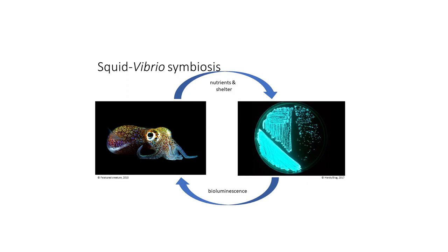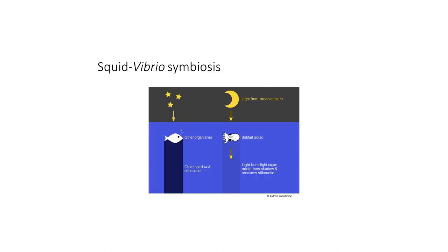The Hawaiian bobtail squid, Euprymna scolopes, lives in the coasts of Hawaii and is in a mutualistic association with the luminescent bacteria Vibrio fisheri. Here is how it works: the squid provides nutrients and shelter to the bacteria, and in return it uses the bioluminescent proteins of the bacteria to camouflage itself from predators that are hypothesized to live beneath the level of the squid.